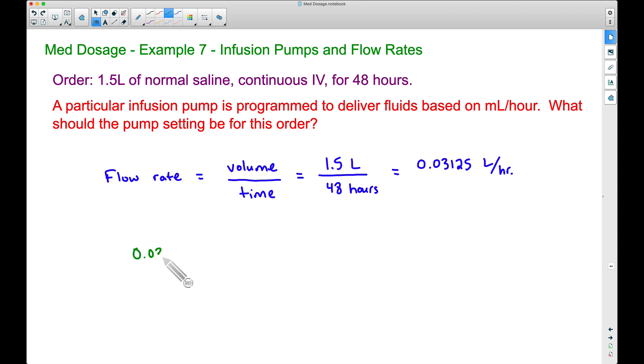Let's take our flow rate right here, 0.03125, and this is liters per one hour. Now the reason why we have to do a little bit more math again is because we need milliliters per hour, but right now we have liters per hour.